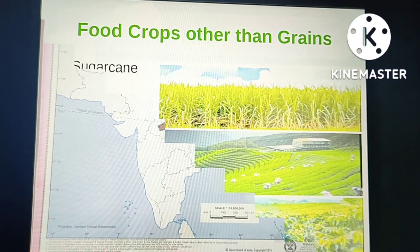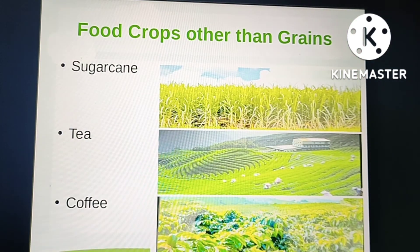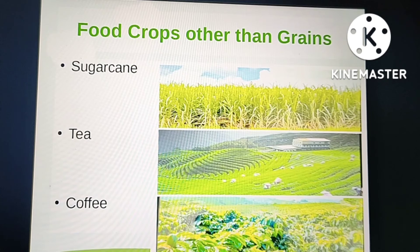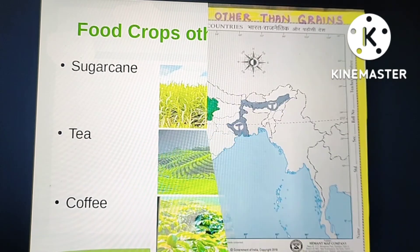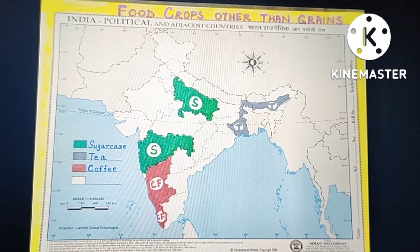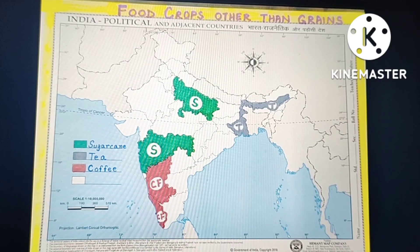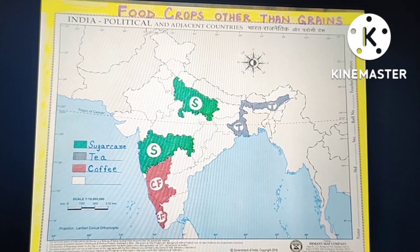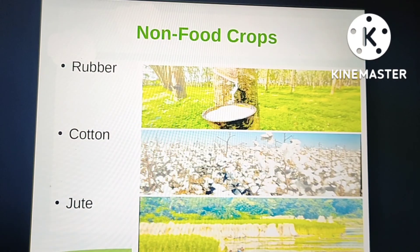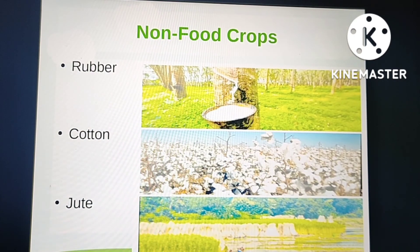Next are food crops other than grains — sugarcane, tea, and coffee. Let's mark on the map. The two most important major producing states of sugarcane are Uttar Pradesh and Maharashtra. For tea, the major producing states are Assam and West Bengal. Coffee is largely produced in Karnataka and Kerala. Moving on to the next category: non-food crops — rubber, cotton, and jute.